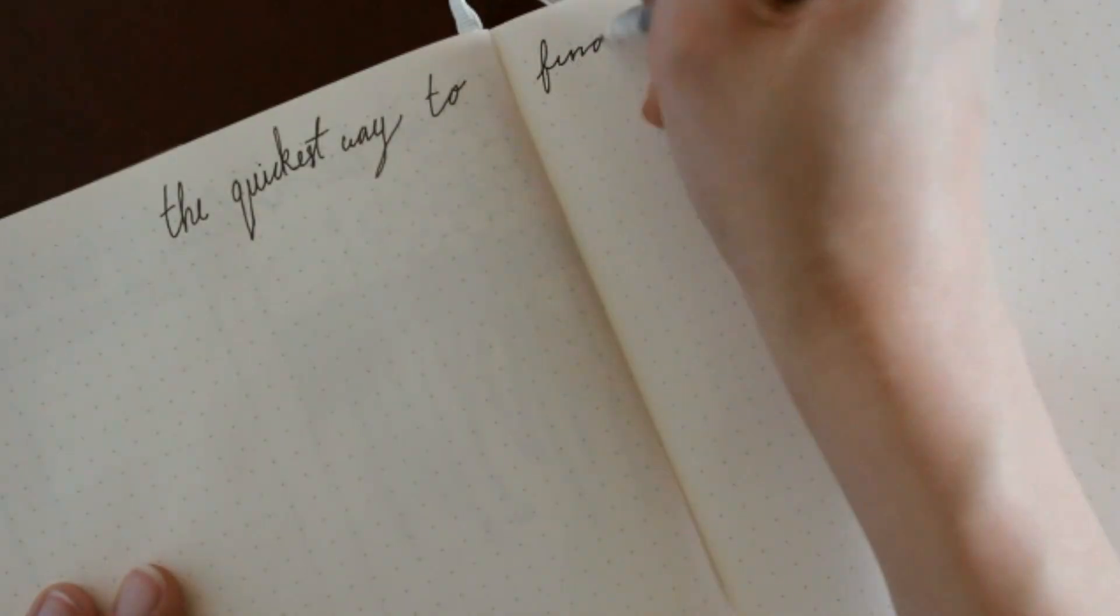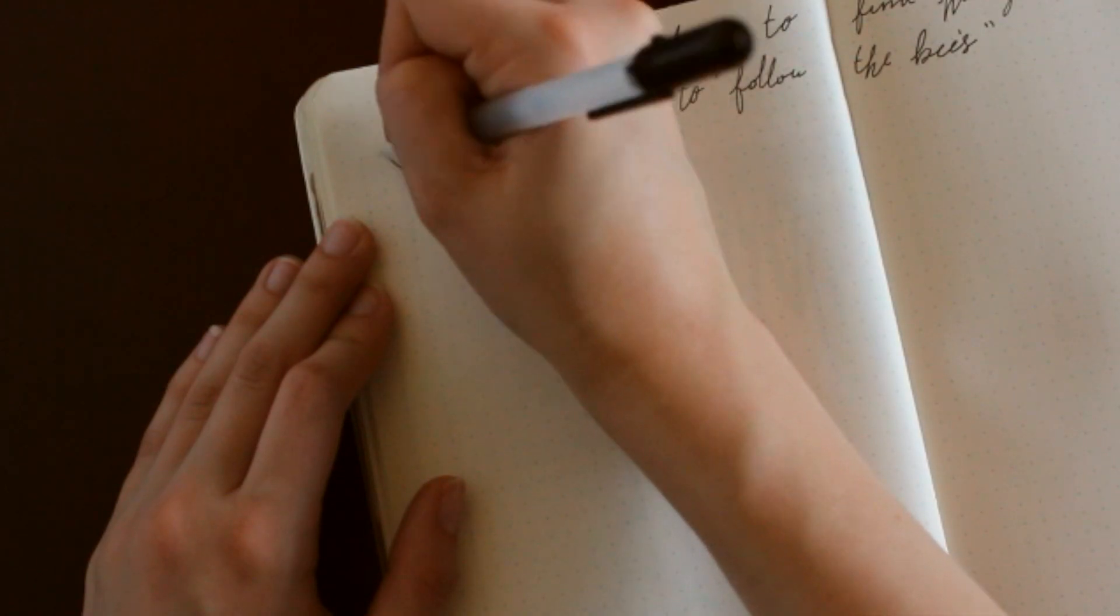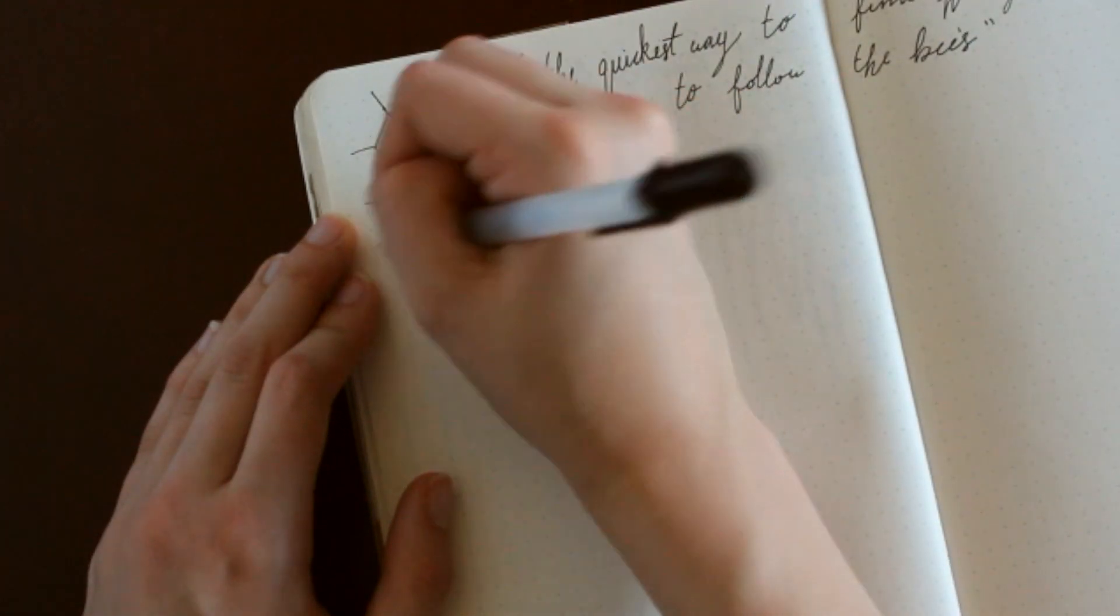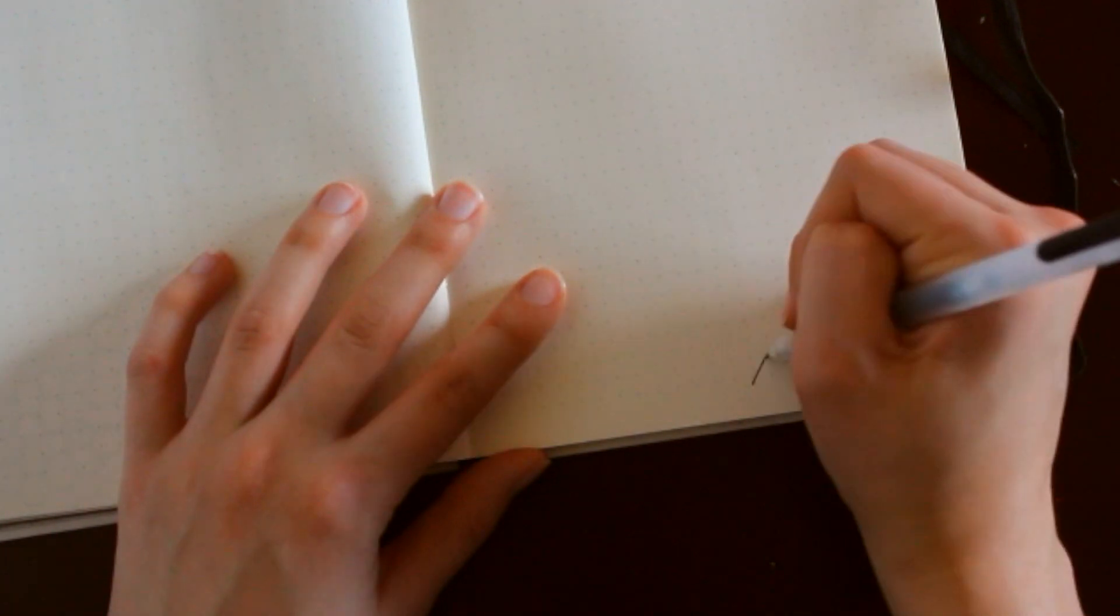So on my brain dump page, I wrote a quote at the top that says, the quickest way to find honey is to follow the bees. There's some honeycombs in each corner of the page, and this is where I just jot down my ideas.